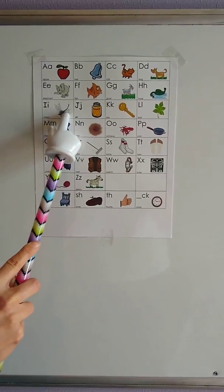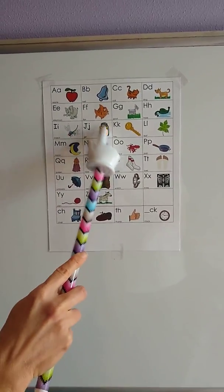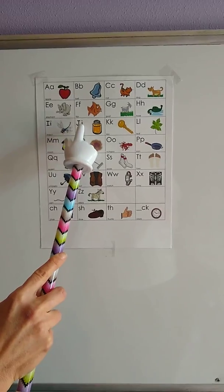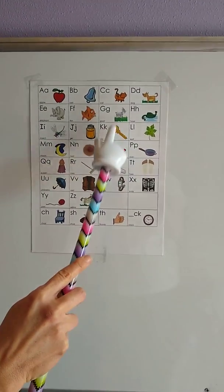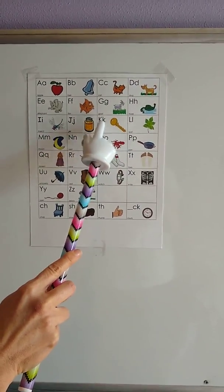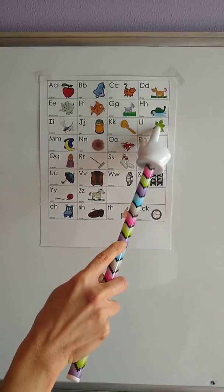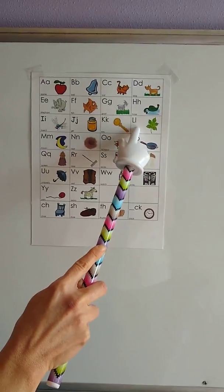Insect, insect, i, i, i. Jar, jar, j, j, j. Key, key, ck, ck, ck. Leaf, leaf, l, l, l.